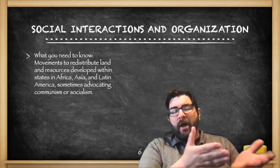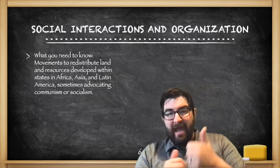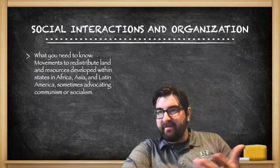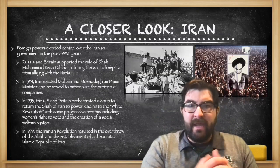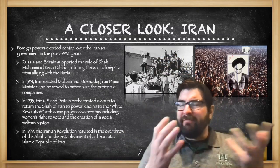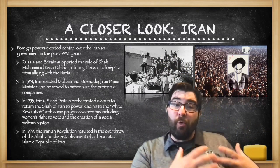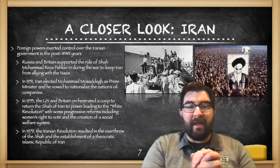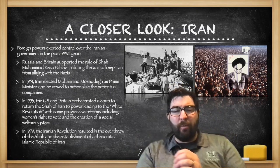We're also going to see movements in other parts of the world to redistribute land and resources in places like Africa, Asia, and Latin America. In many cases, these new states and leaders will advocate communism or socialism in their quest for land reform. In Iran, foreign powers have long exerted influence over the Iranian government. During World War II, Russia and Britain supported the rule of Shah Muhammad Pahlavi to keep Iran from allying with the Nazis.